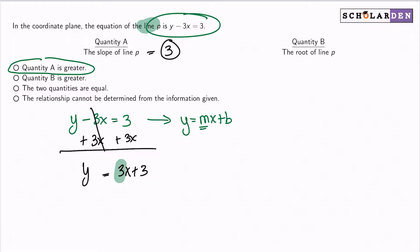Now let's go ahead and look at the root of line P. So the root is a little different than the slope. The root is essentially the x portion of the x intercept. So what we want to do here, this is where y equals 0.